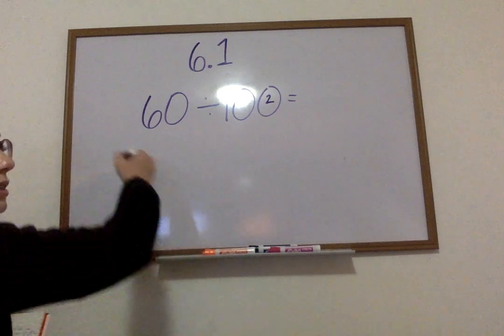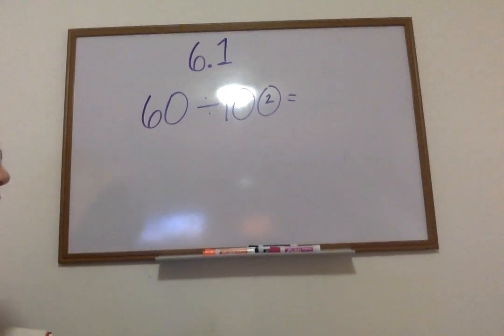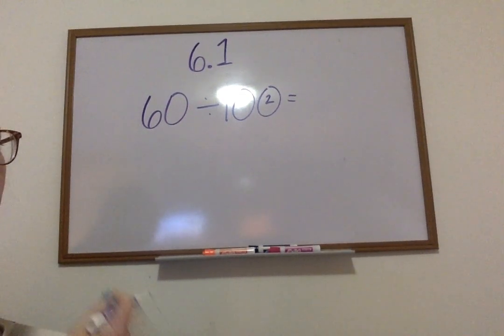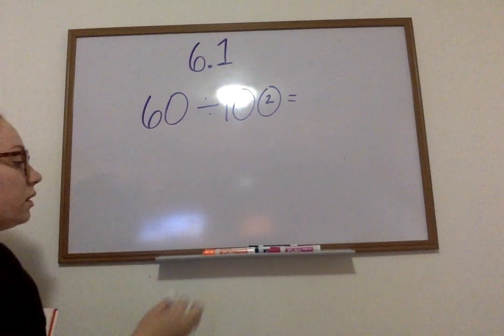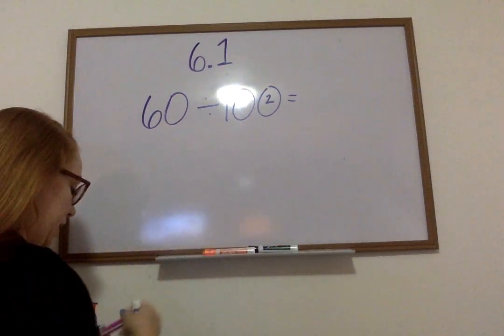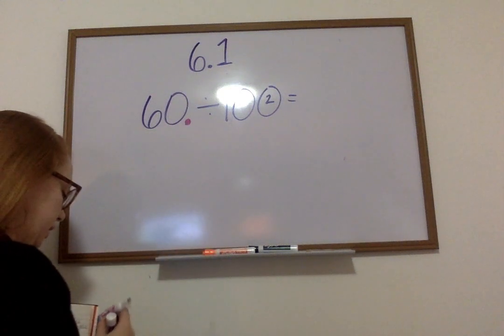Well, in 60, I don't see any decimals. It's hiding. When we can't see a decimal, that means it's an invisible decimal. Our decimals that we can't see are always hiding at the back of the number. The back of the number would be right here, where the zero is.